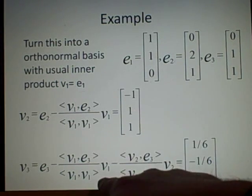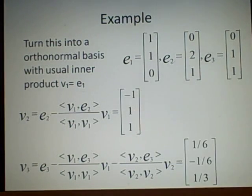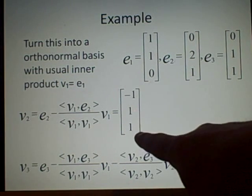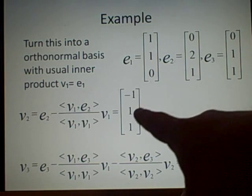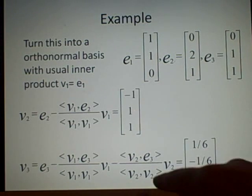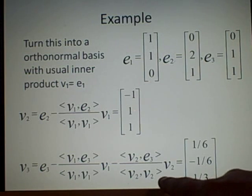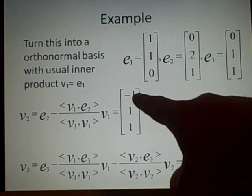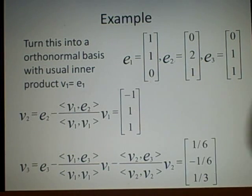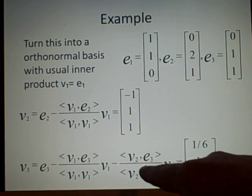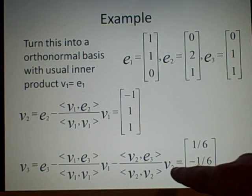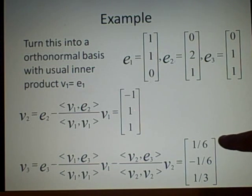So, we're minusing a half of this, and minusing V2 dot E3. This is V2 dot E3, which is 0, 1, 1, which is 2, over V2, which is V2 dot E2, which is this, this, which is 1, 1, 1, which is 3. So, minus 2 thirds, times V2, which is this, which will give you a sixth, minus a sixth, and a third.